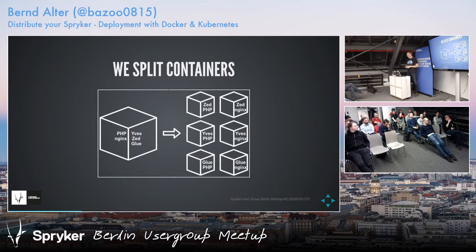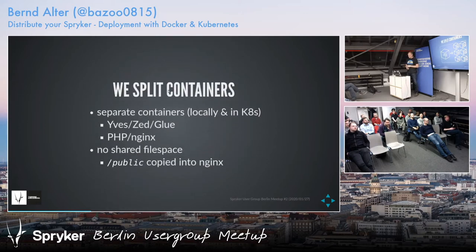We split this all up. We have one PHP container, one NGINX container per layer — like ZE, glue. We also don't have any shared file space, so we copy everything — for example the public stuff, the static content — into the NGINX containers.